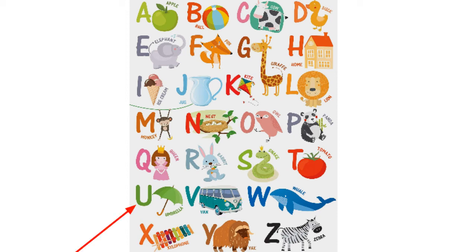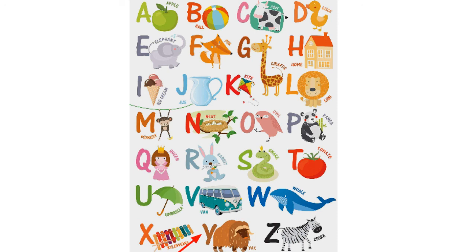U for Umbrella, V for Van, W for Wheel, X for Xylophone, Y for Yak, Z for Zebra.